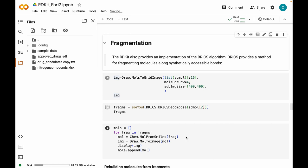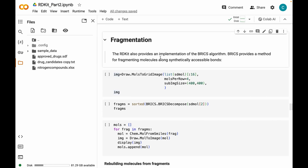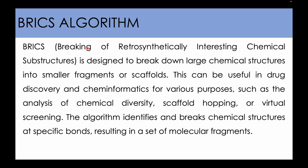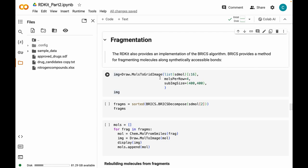The next topic is fragmentation. RDKit provides an implementation of the BRICS algorithm. BRICS — which stands for Breaking of Retrosynthetically Interesting Chemical Substructures — provides a method for fragmenting molecules along synthetically accessible bonds. It is designed to break down large chemical structures into smaller fragments or scaffolds. This can be useful in drug discovery and cheminformatics for purposes such as analysis of chemical diversity, scaffold hopping, or virtual screening. The algorithm identifies and breaks chemical structures at specific bonds, resulting in a set of molecular fragments.